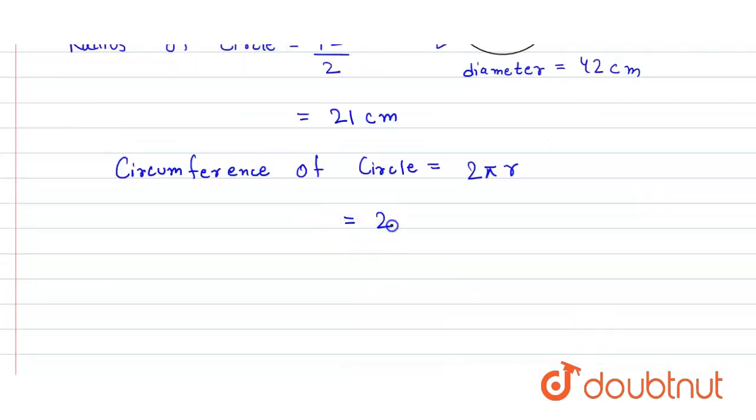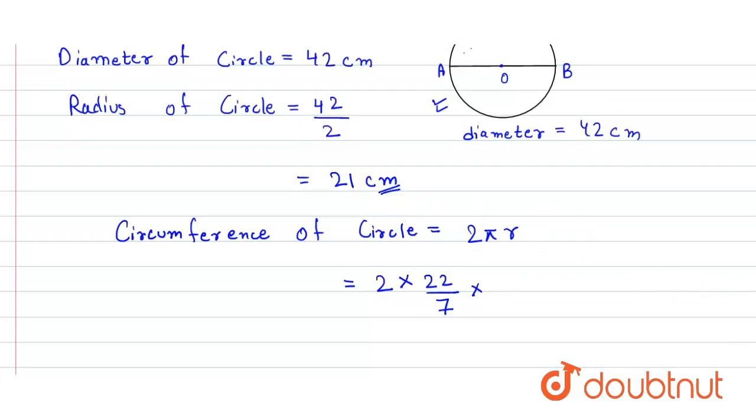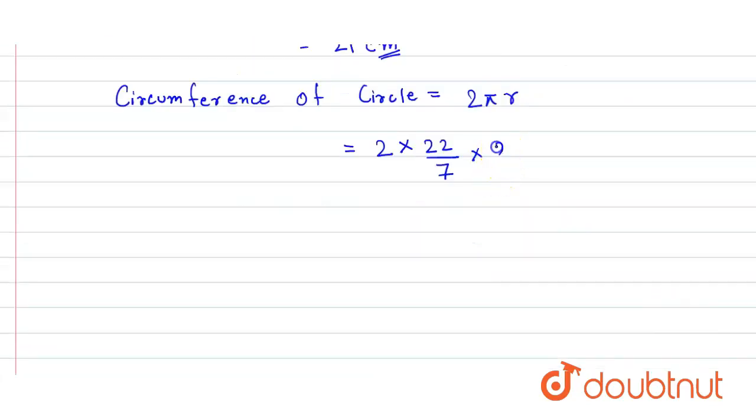So here we get 2 times π, where π equals 22 divided by 7, times the radius which is 21 centimeters. So 7 cancels with 21 and we get 3. That will be 3 times 2 equals 6 times 22.